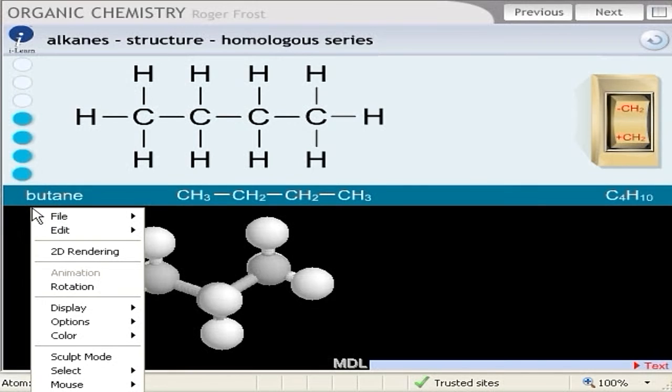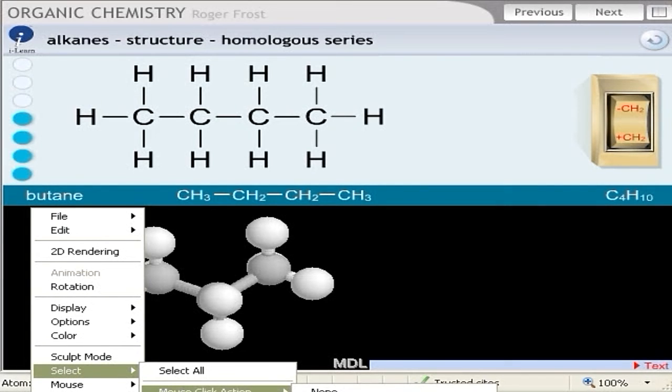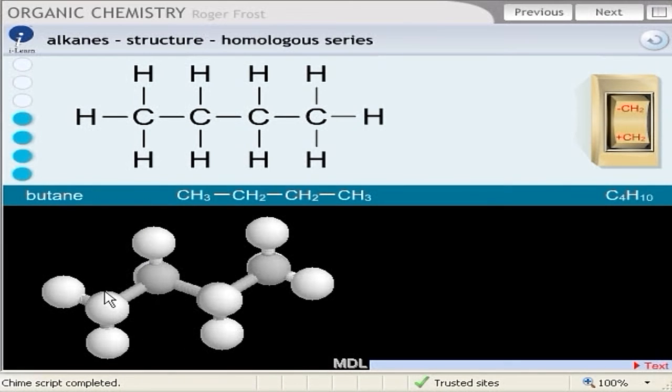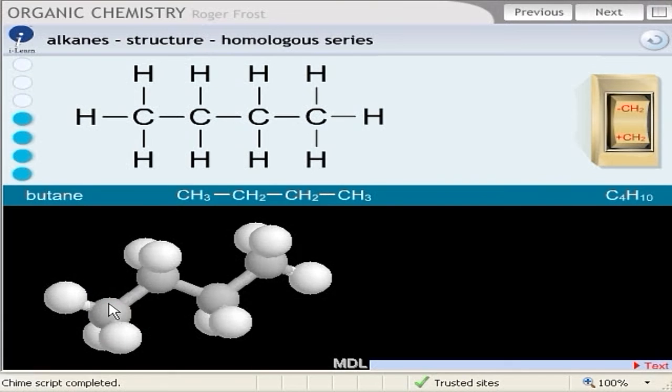If I now right click on the whole model and then go select and mouse click action, I can choose something which you might not be able to see called distance.